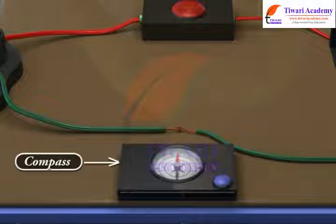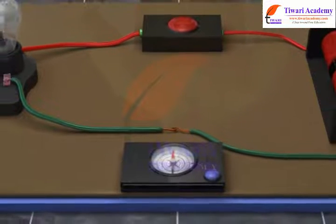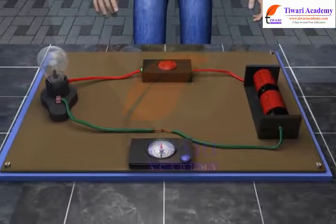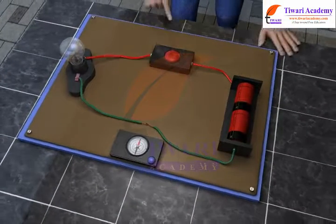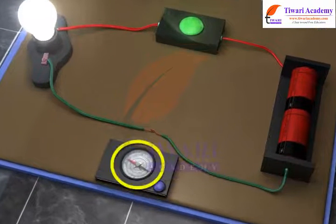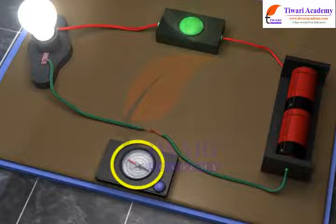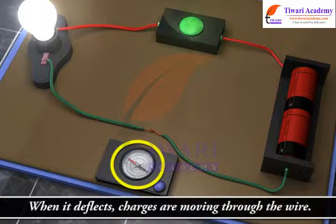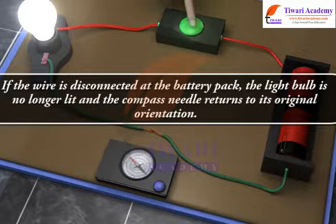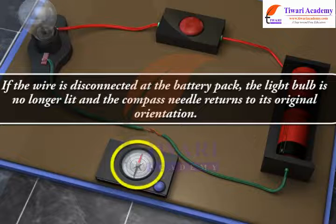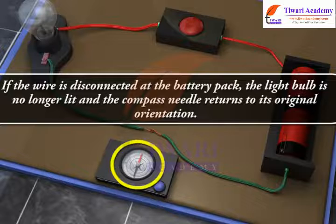Let us place a compass beneath the wire at any location such that its needle is placed in alignment with the wire. Once the final connection is made to the battery pack, the light bulb lights and the compass needle deflects. The needle serves as a detector of moving charges within the wire. When it deflects, charges are moving through the wire. And if the wire is disconnected at the battery pack, the light bulb is no longer lit and the compass needle returns to its original orientation.